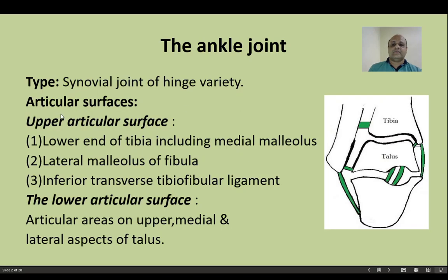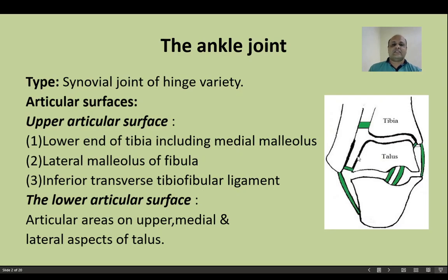The superior or upper articular surface of the ankle joint is formed by the lower end of tibia including the medial malleolus. The lateral malleolus of fibula also contributes to the superior articular surface. Additionally, the inferior transverse tibiofibular ligament bridges the gap between the tibia and fibula posteriorly, behind the talus. These three components form the upper articular surface, while the lower articular surface is formed by articular areas on the medial, upper, and lateral aspects of the talus bone.